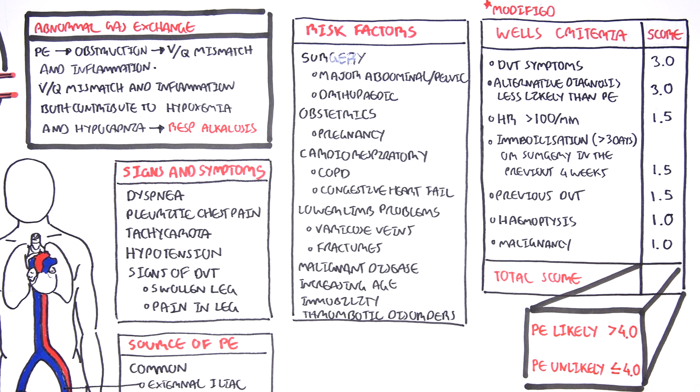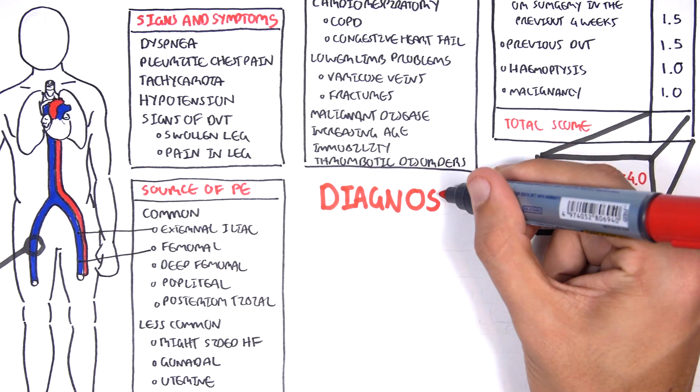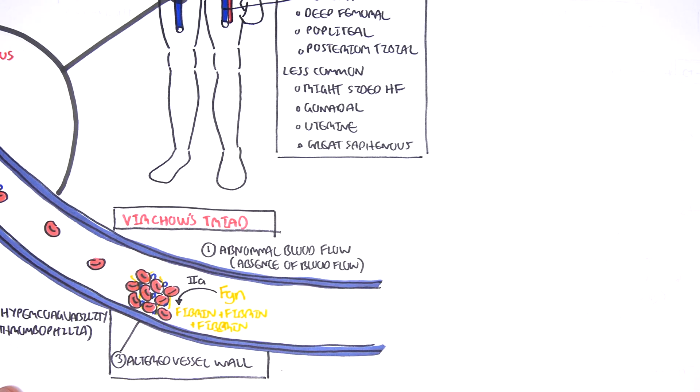What we will look at next is diagnosis of PE using an algorithm. But before that, we have to learn more about the D-dimer assay because it is an important part of diagnosing or ruling out pulmonary embolism.